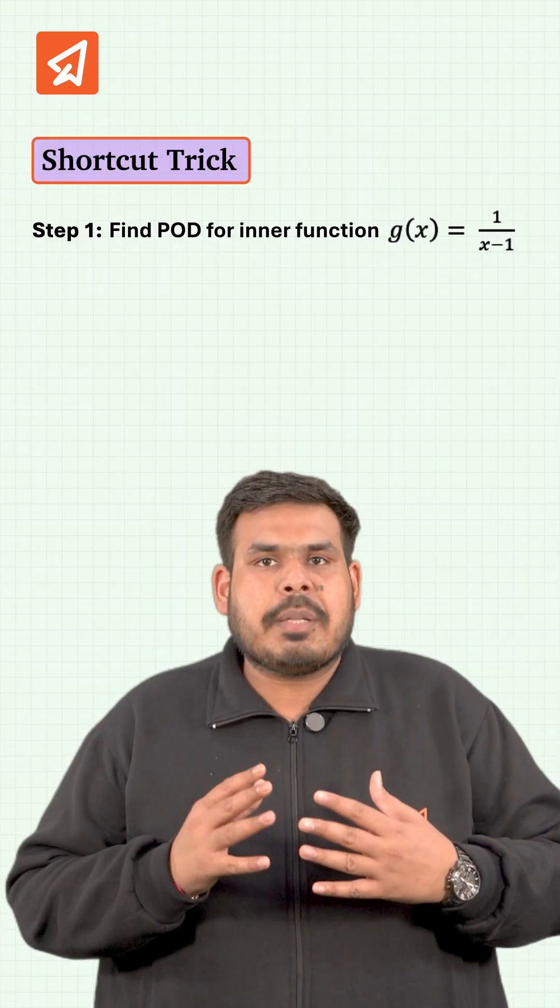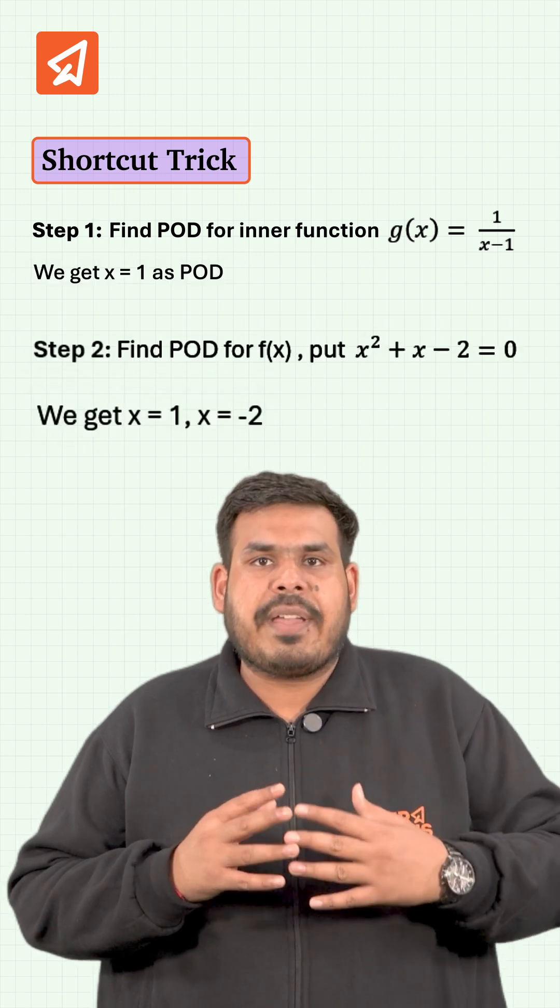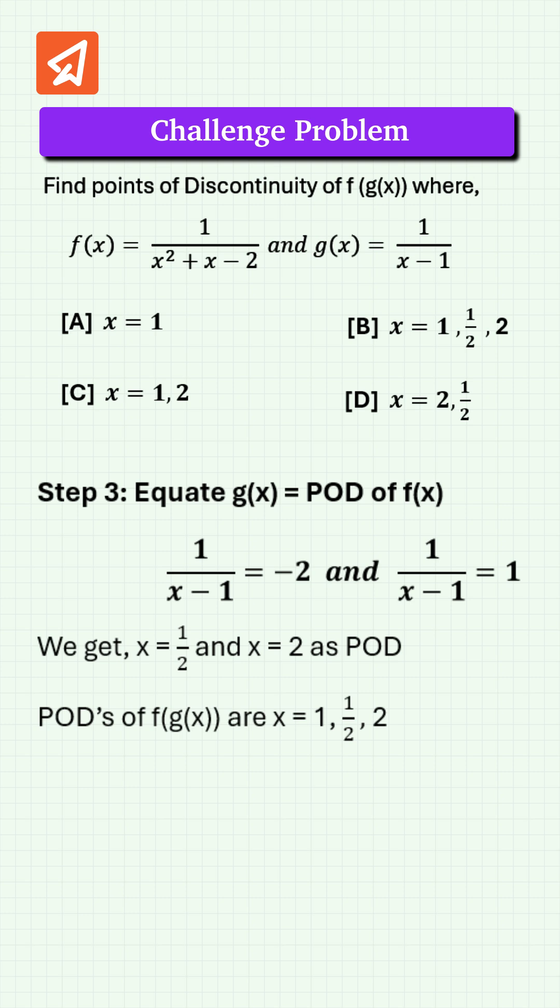But by using this trick: first find POD of g(x), we get x = 1. Next find POD for f(x) and equate it with g(x). We get x = 2 and 1/2 as POD from here. So PODs of f(g(x)) are x = 1, 2, and 1/2.